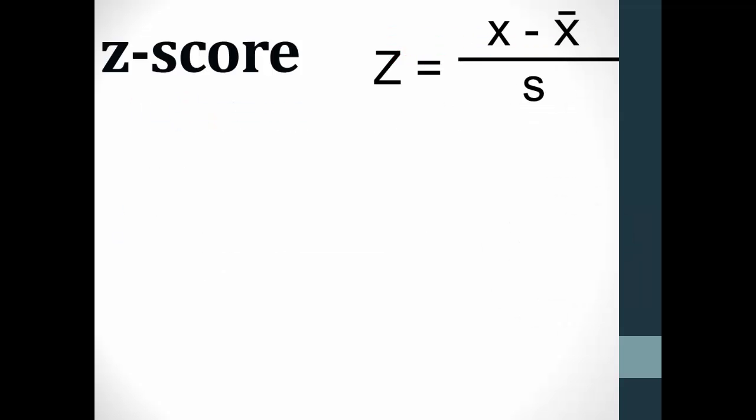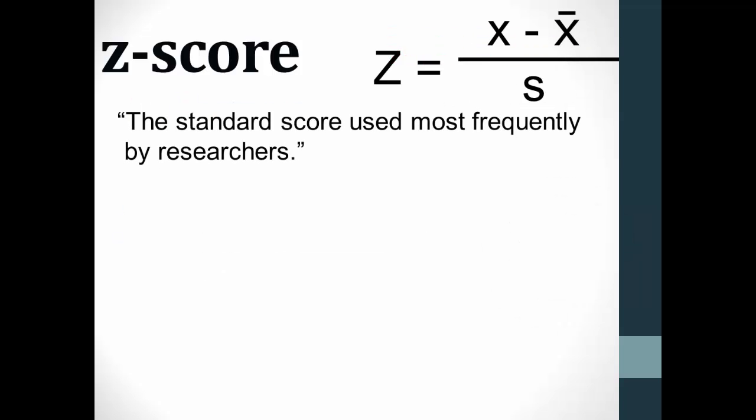Let's start with a few definitions. The first definition describes the usage of the z-score as the standard score used most frequently by researchers. While this really doesn't tell us much about what the z-score does, it does tell us that understanding the z-score is important because as researchers, we are likely to use it frequently.